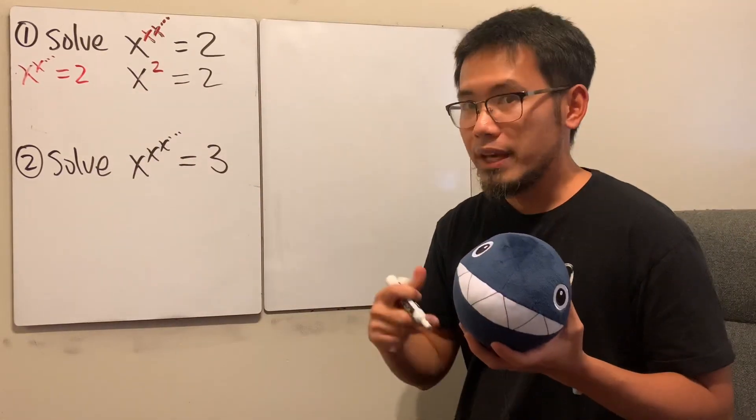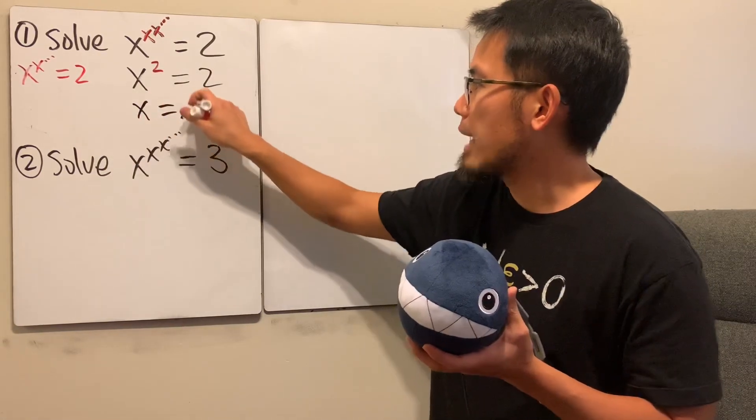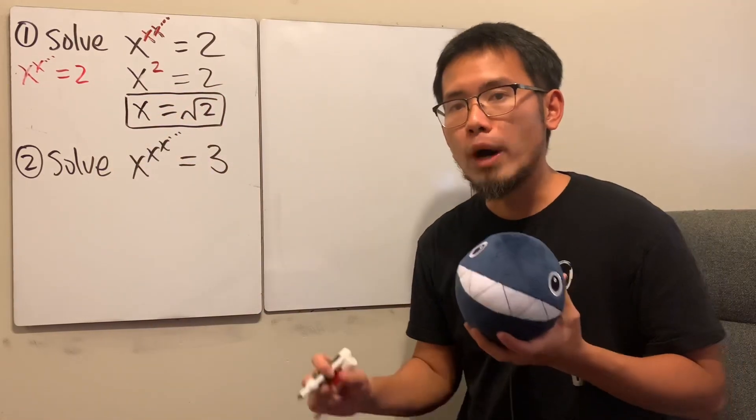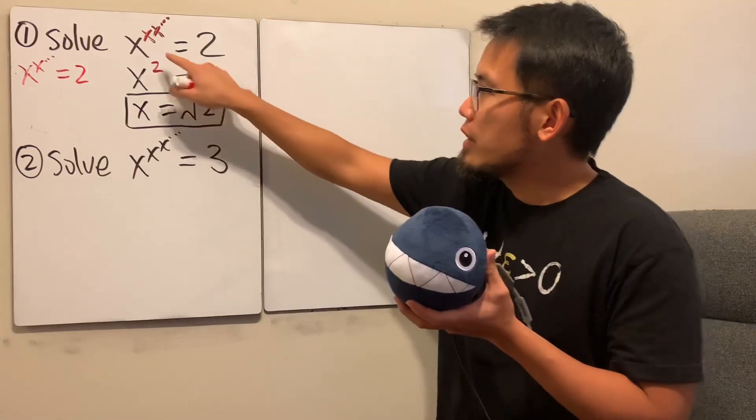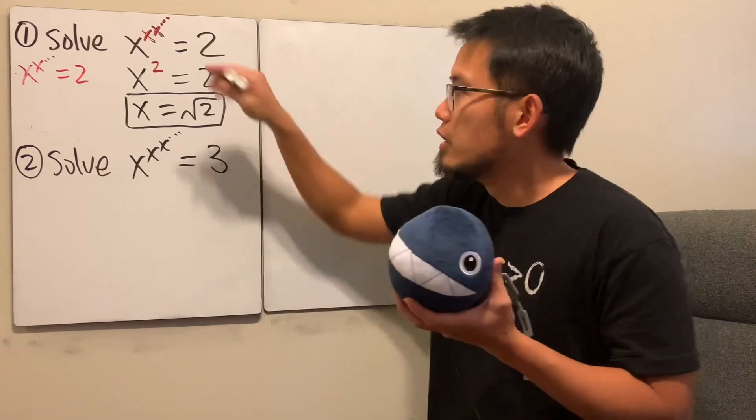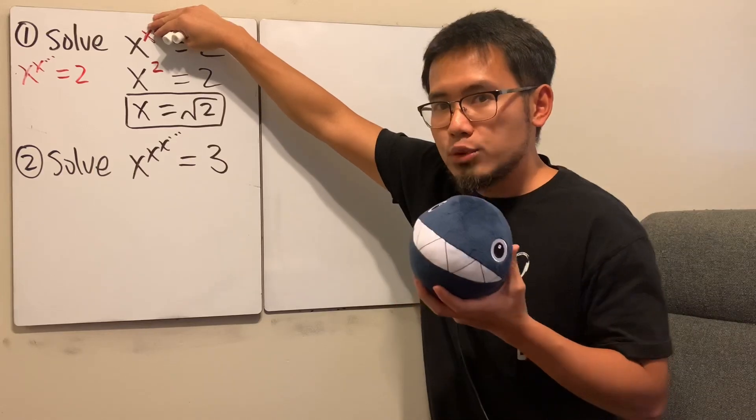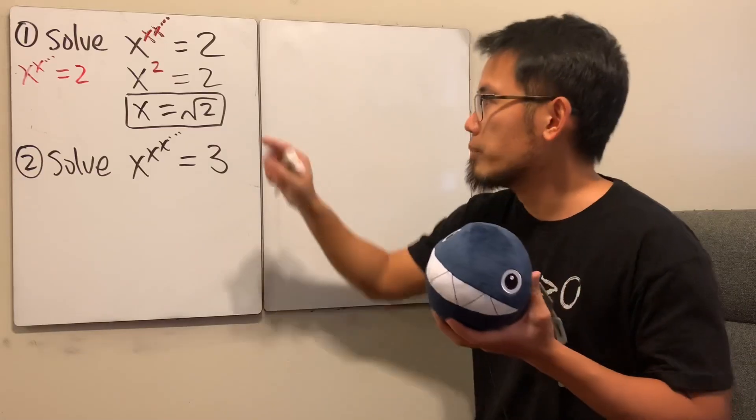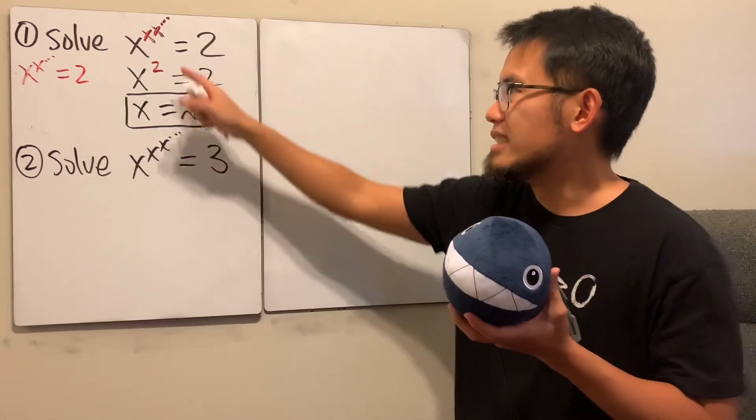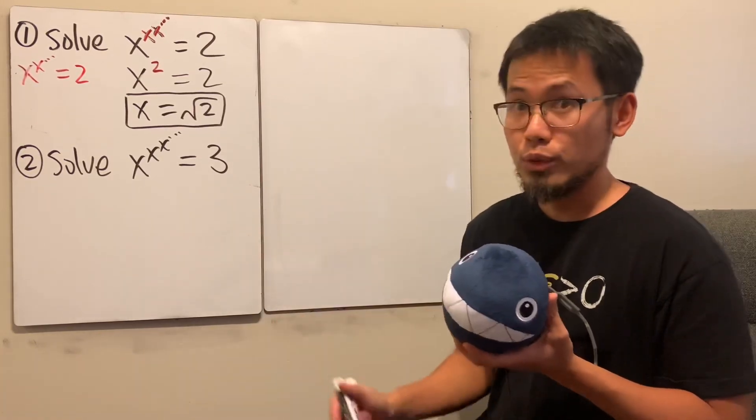To solve this, we take the square root on both sides, just the positive version. So x equals positive square root of 2. You might be wondering why not negative? Technically, when you look at this, you should do this in terms of a sequence. You start with x, then you look at x to the x power. That's the reason why you do not use negative numbers, especially when we have limits.